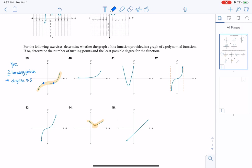Now, if we take a look at 43, it's smooth, no sharp points, it's continuous. So again, my answer would be yes, there's a polynomial here.